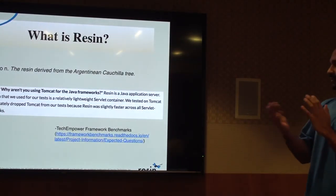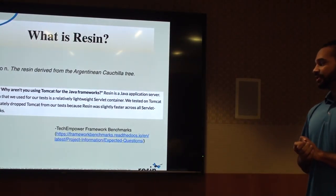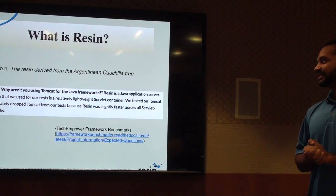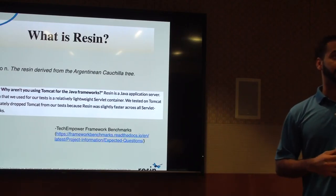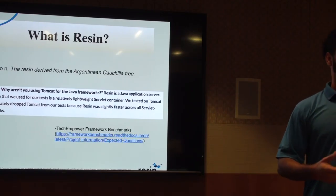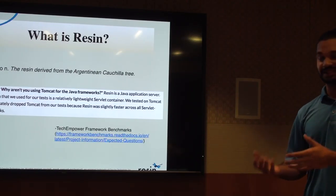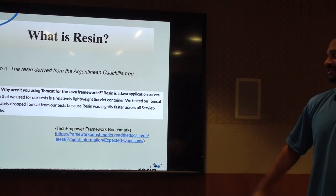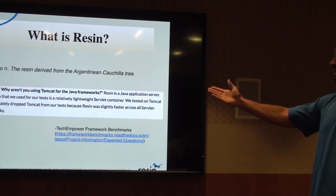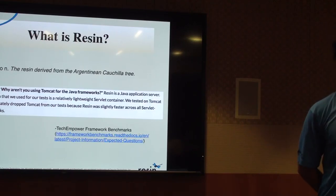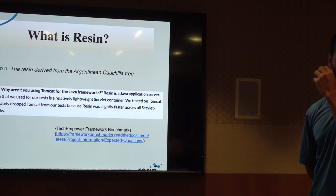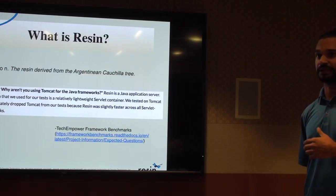What is Resin? The definition: Caucho, the noun, is the resin derived from the Argentine Couchilla tree — that's where our company name and software products come from. In terms of what Resin actually is, I pulled this quote from TechEmpower. TechEmpower runs well-known benchmarks with a huge GitHub repository benchmarking all the latest frameworks, covering JSON serialization, plain text, and database storage.